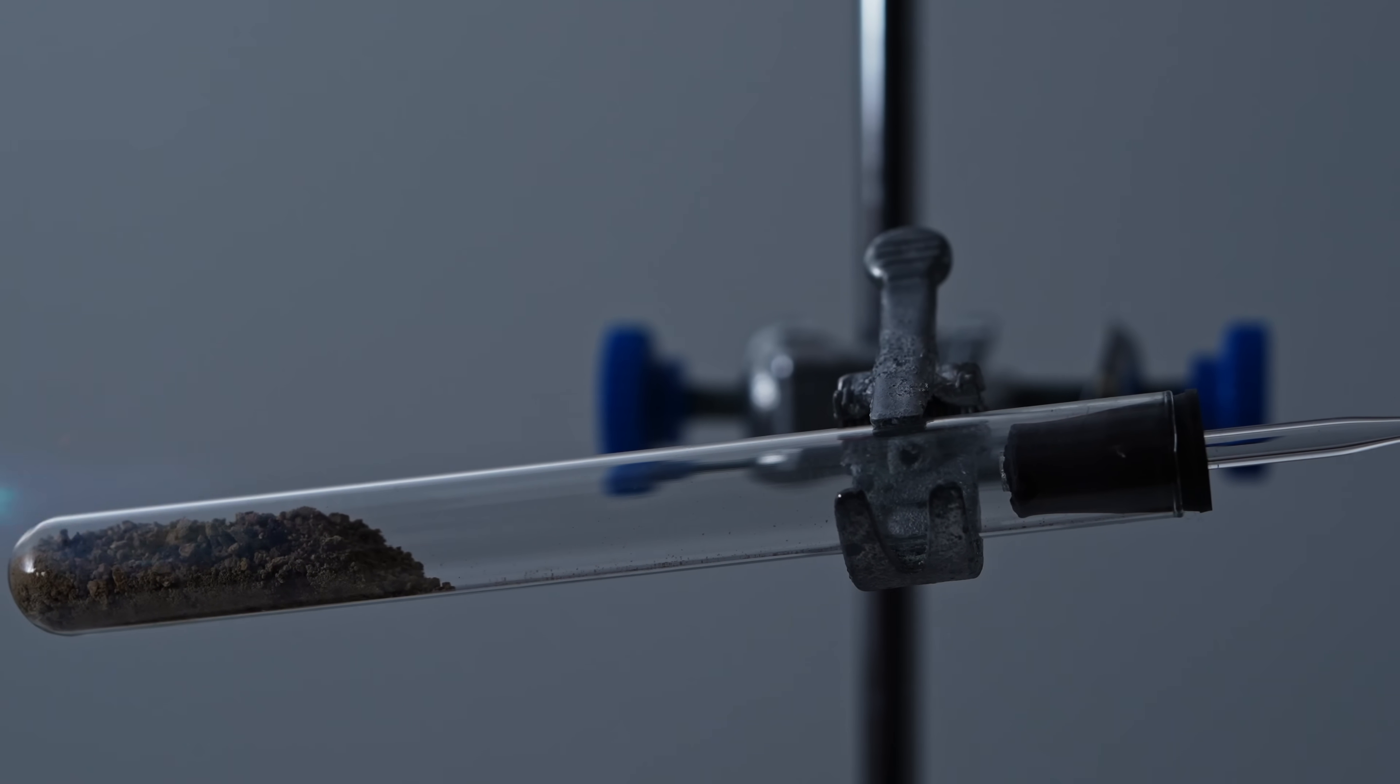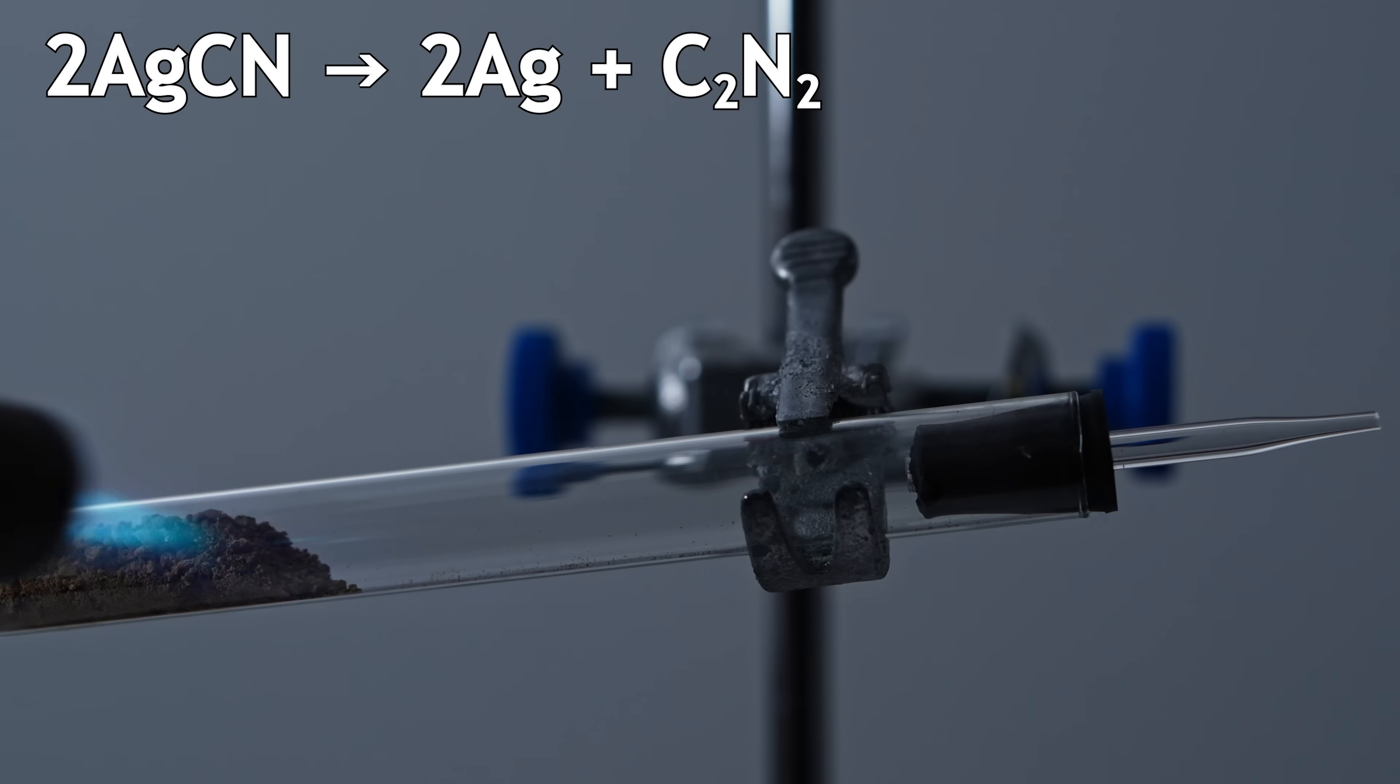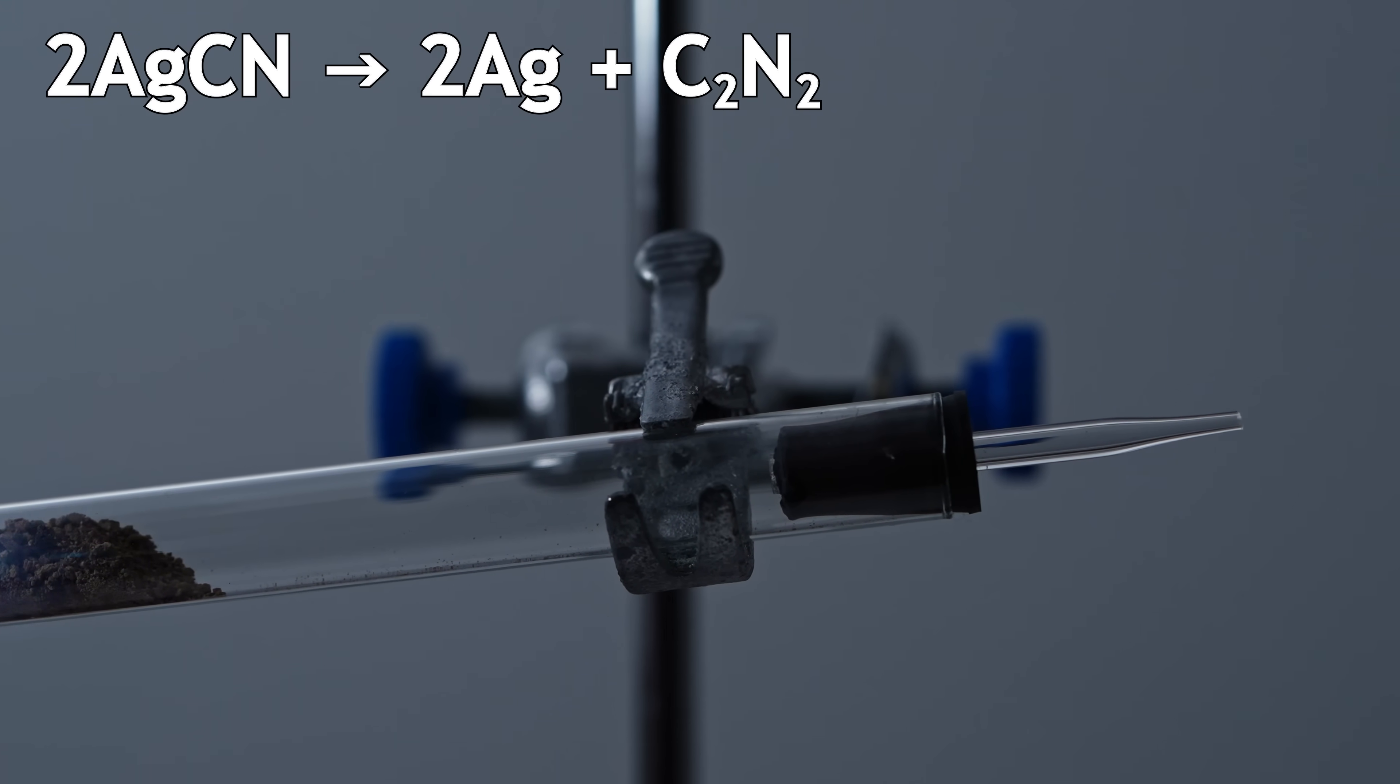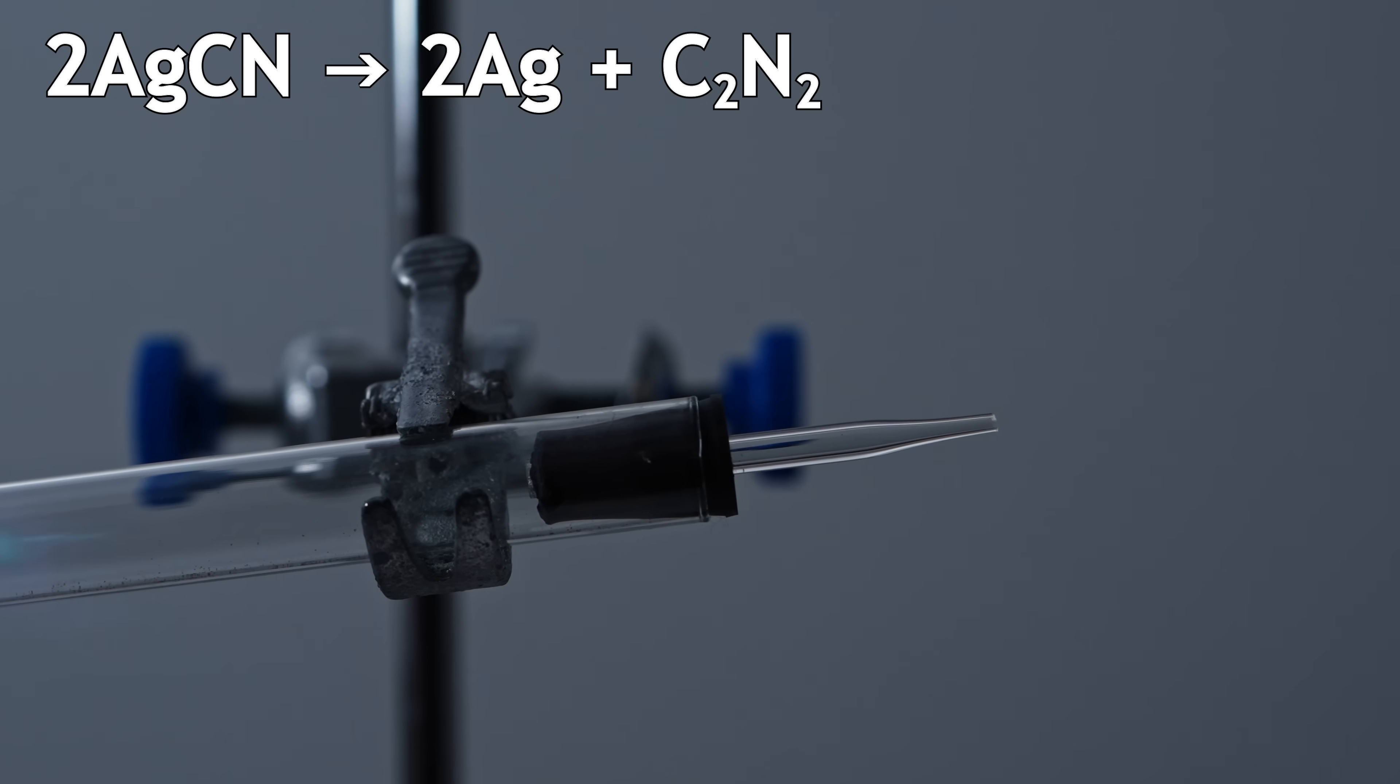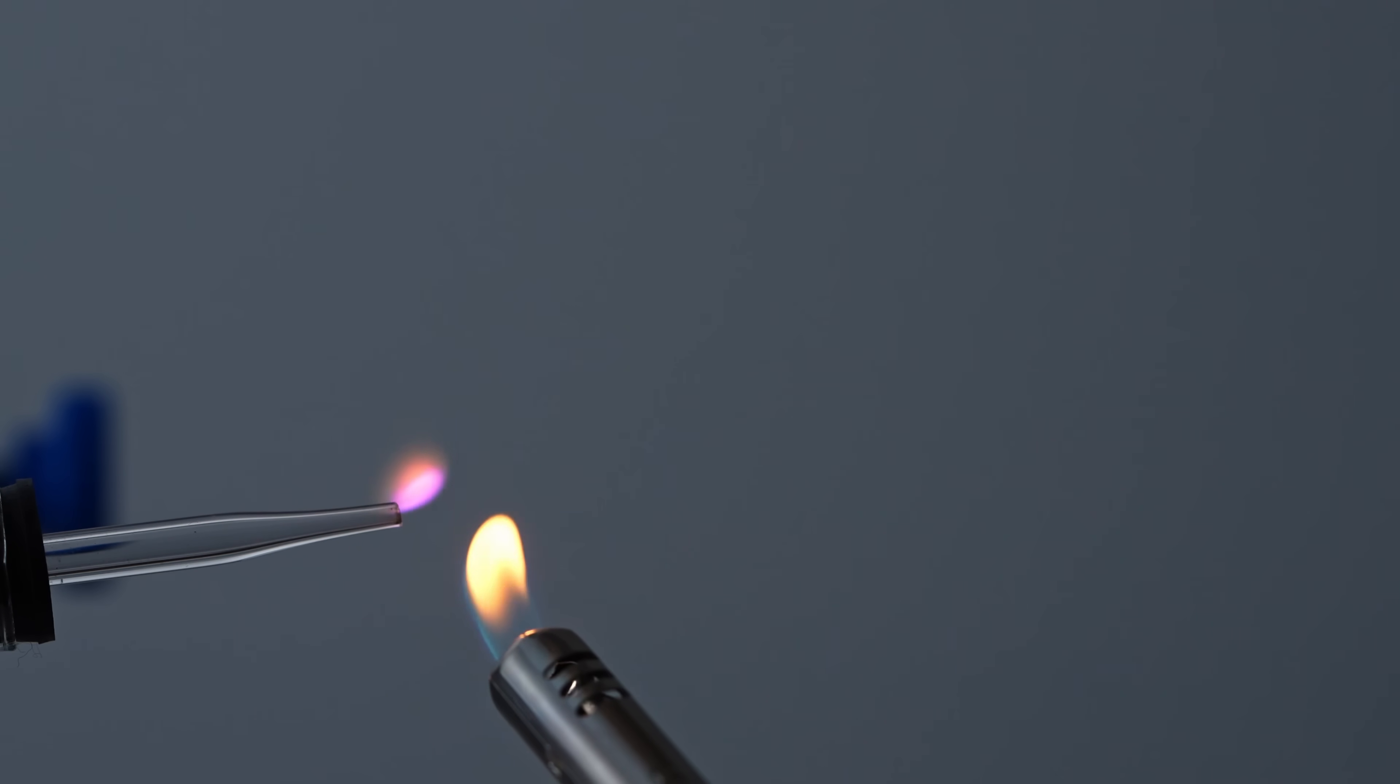The flame of burning cyanogen should have a deep pink color. Let's check it. I replaced the rubber stopper to make it easier to light, and now I'll bring the open flame to the end of the gas outlet tube. Yeah, the color of the flame of burning cyanogen really has a rich pink hue, which, due to the heating of the glass tube, quickly turns orange because of the sodium ions present in the glass.